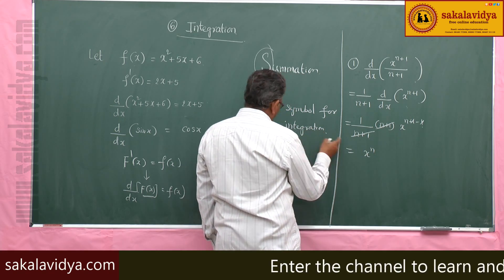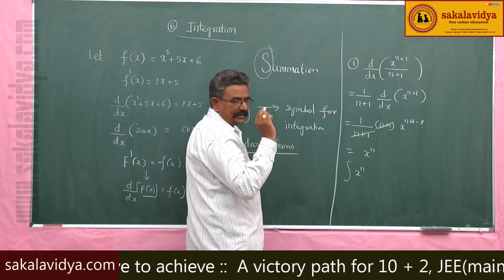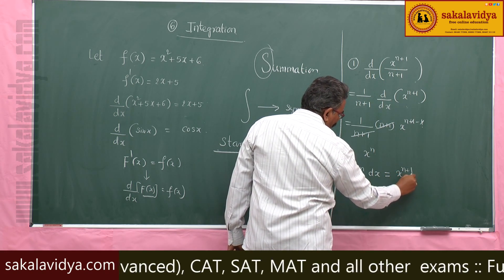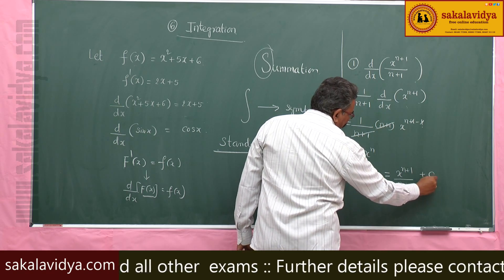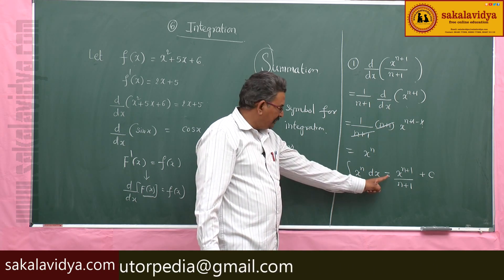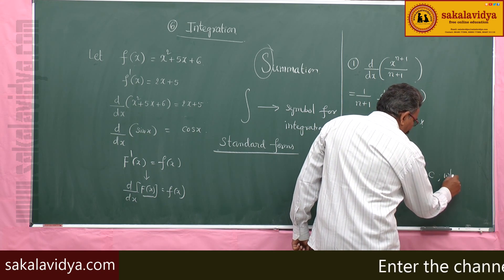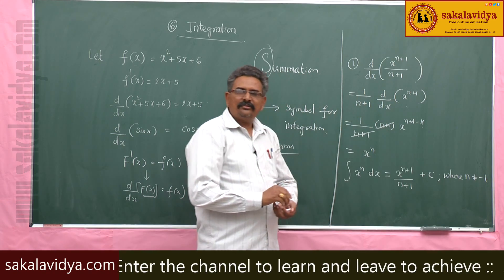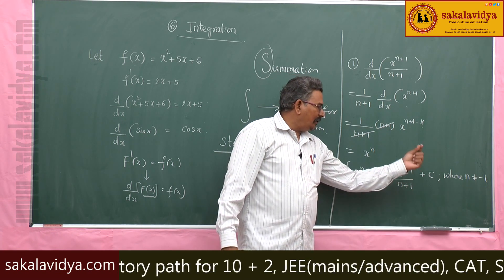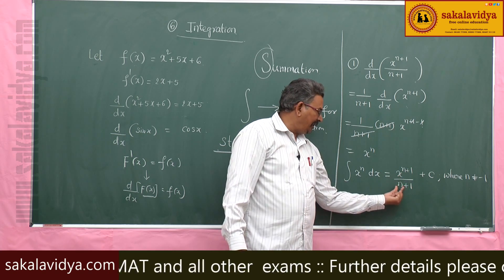The anti-derivative is nothing but the integral. So the integral of x to the power n plus 1 by n plus 1 — and if there is some constant added, its derivative is also x to the power n. That is why we get an indefinite integral. The integral of x to the power n dx equals x to the power n plus 1 by n plus 1 plus c, this constant being the constant of integration, where n does not equal minus 1. If n equals minus 1, then n plus 1 becomes 0 and the expression is undefined.